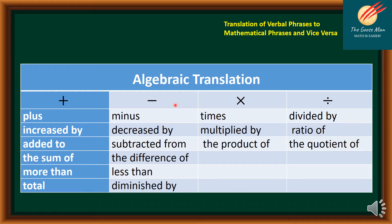On the other hand, the minus symbol means decrease by, subtracted from, the difference of, less than, and diminish. The multiplication symbol means times, multiplied by, and the product of. While the division symbol in English words means divided by, ratio of, and the quotient.